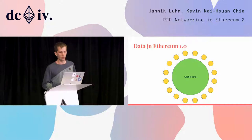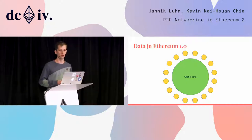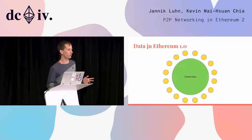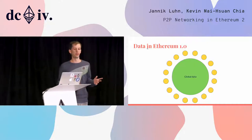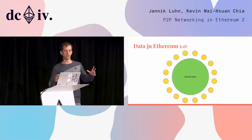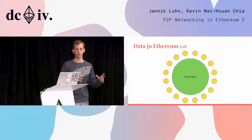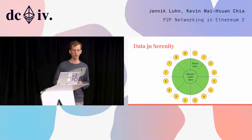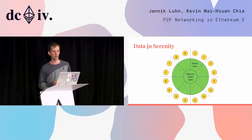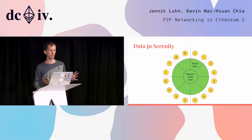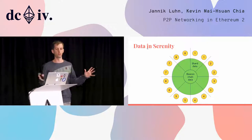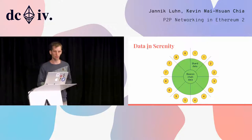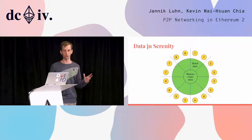What kind of data? In the original Ethereum it's mostly transactions and blocks, and the important thing is that all nodes basically download the same data — there's no distinction at all. In Serenity things get different, mostly because of sharding. Sharding means we basically split the data up into different shards, and one particular node only downloads the data for that particular shard.